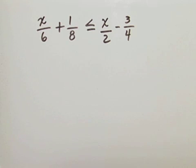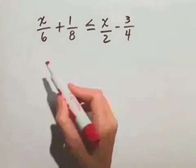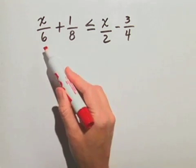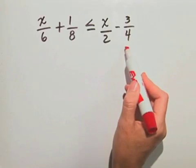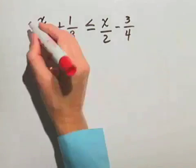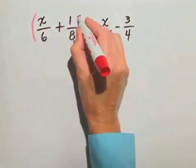Let's solve the inequality. We'll start by clearing the fractions. Because we have all the denominators that go into 24, we can multiply both sides of this inequality by 24.